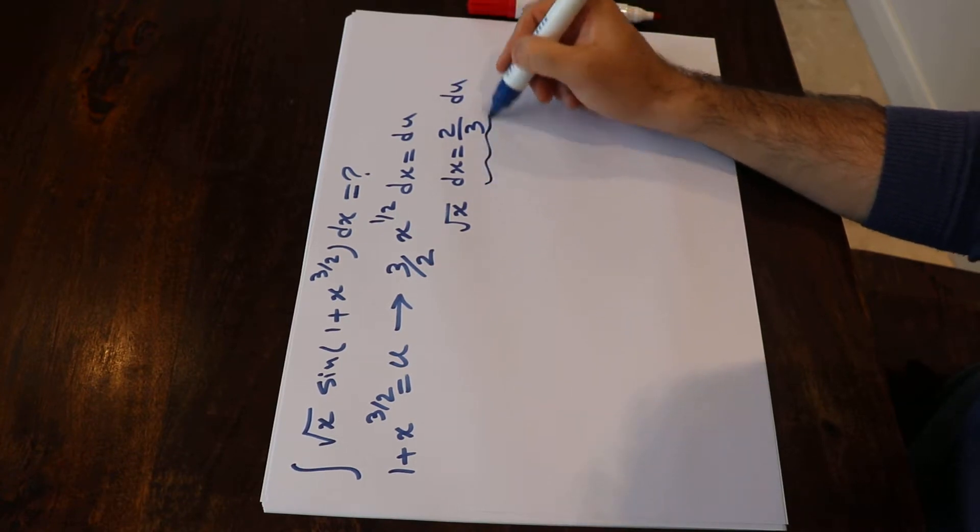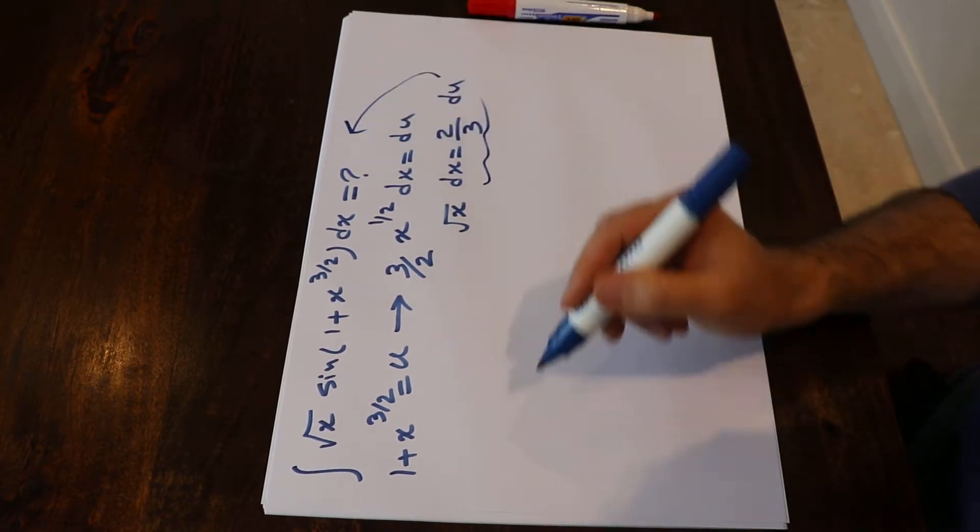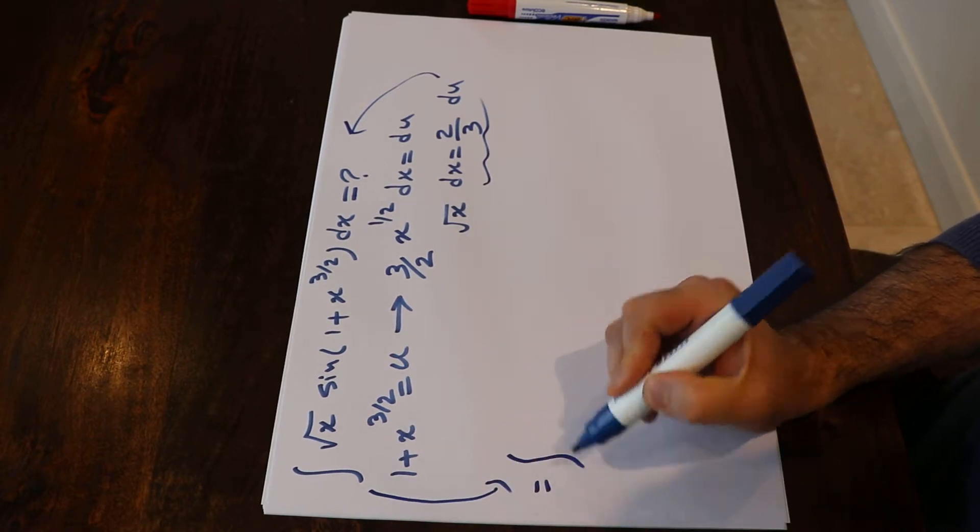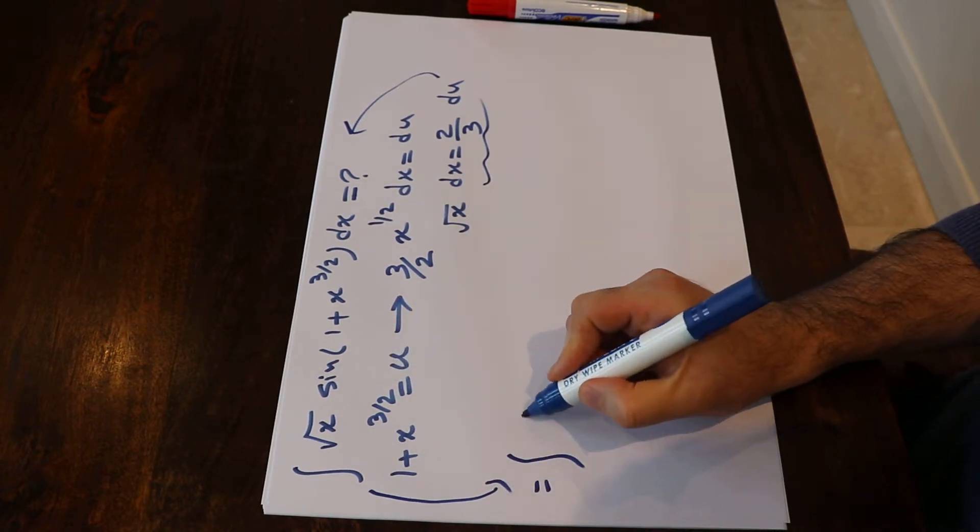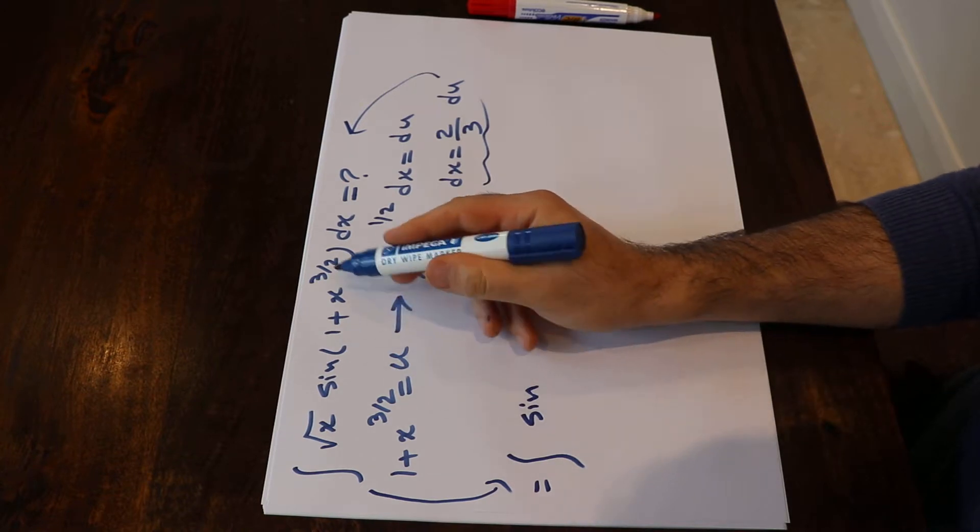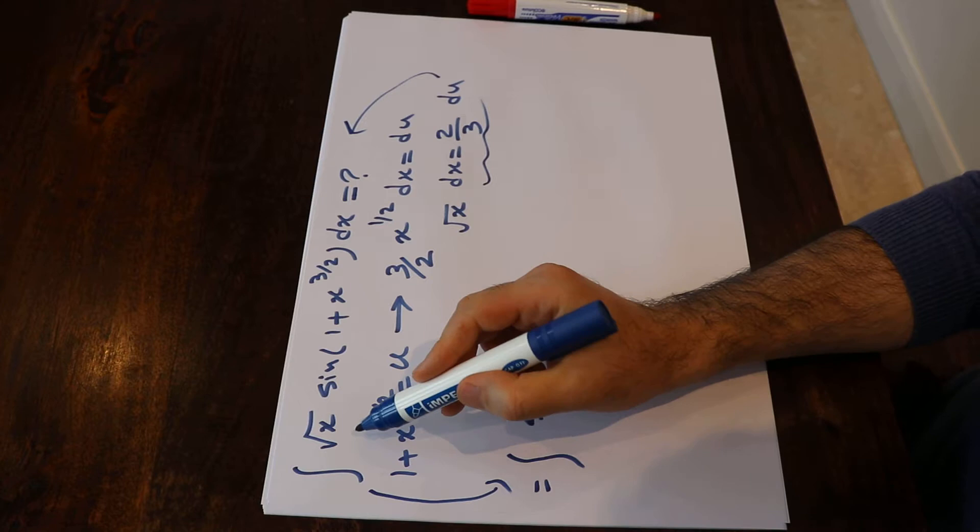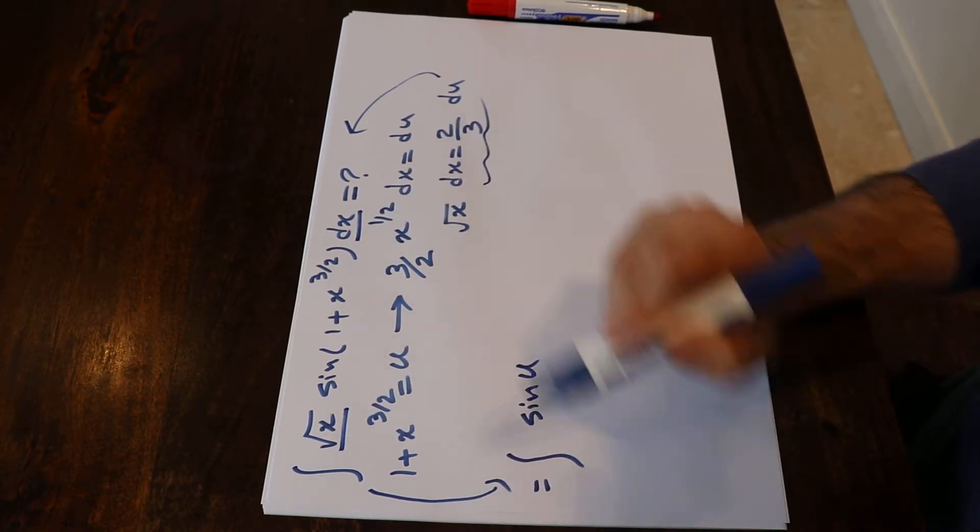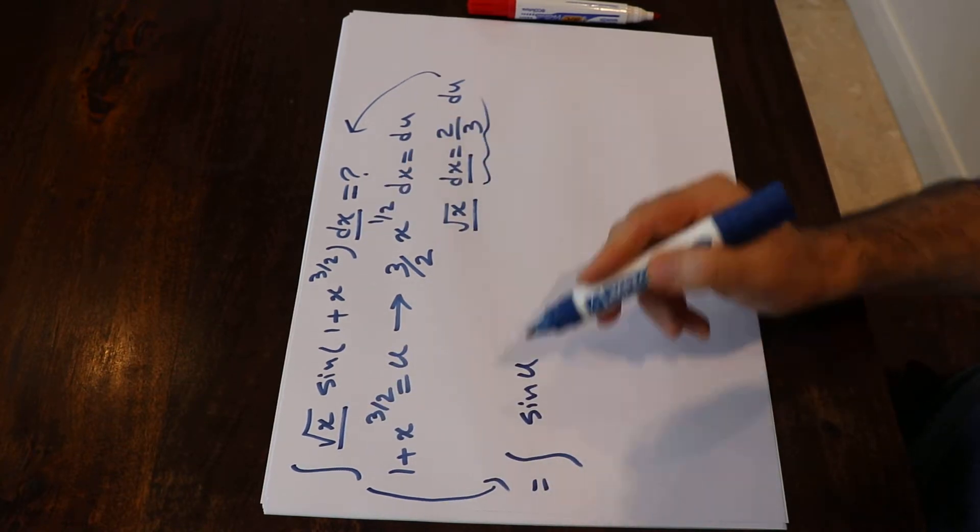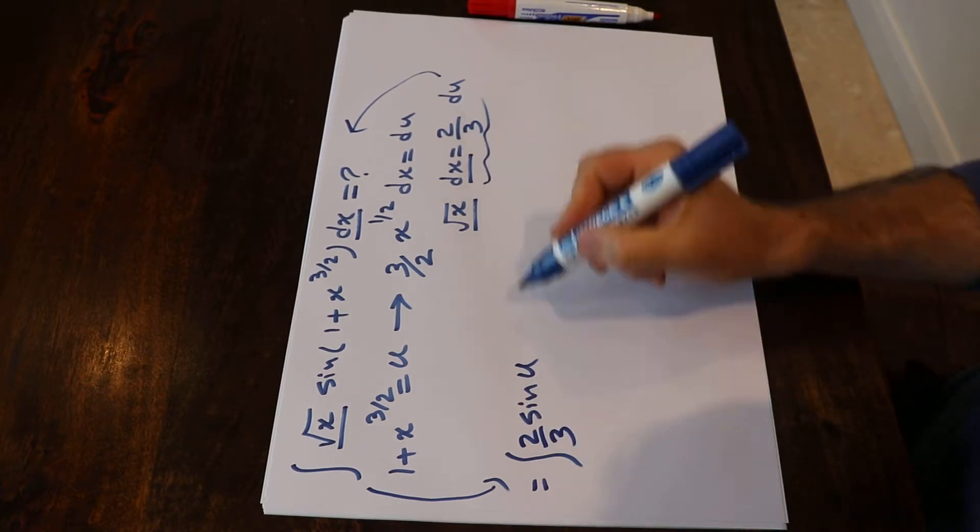So if you substitute this expression into the integral and rewrite it, you get sine of u. Instead of 1 plus x to the power of 3/2, I write u. And instead of square root of x times dx, I write 2/3 times du.